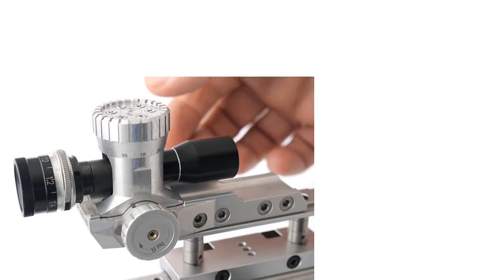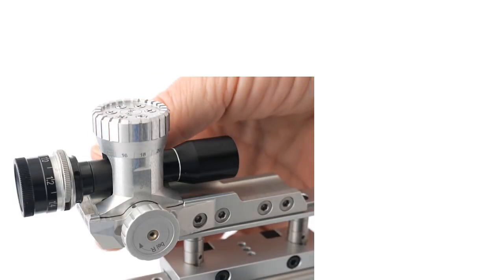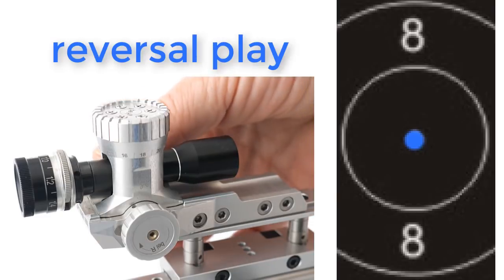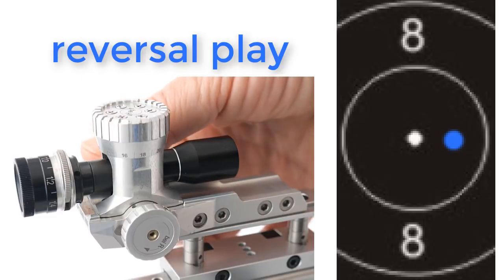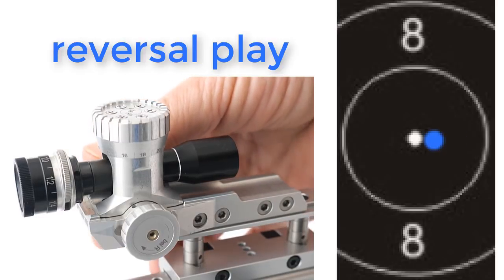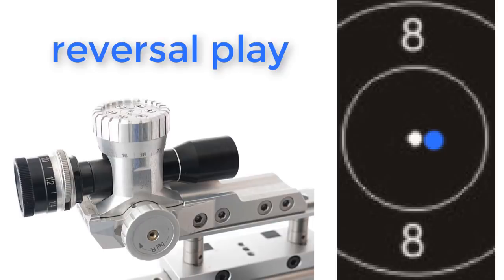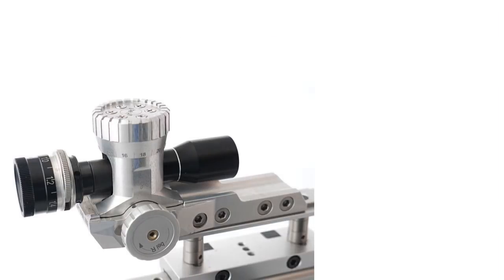The biggest problem in the accuracy is if you turn the direction. So if you do two clicks to one side and you do another click back then there should be a movement which not happens with every diopter.